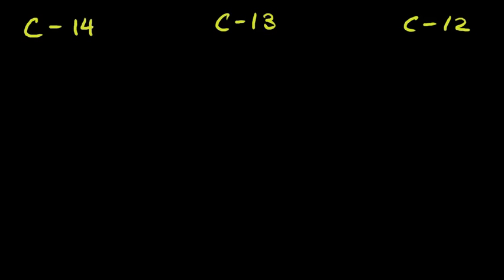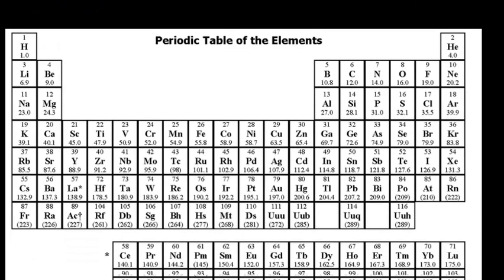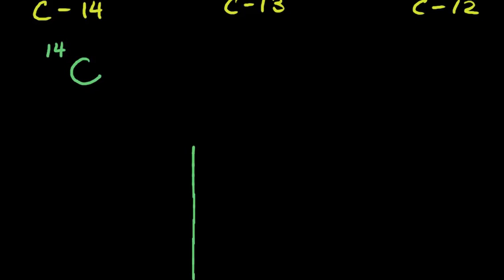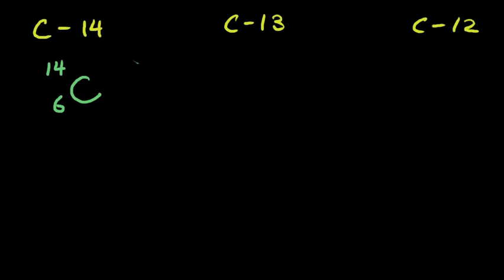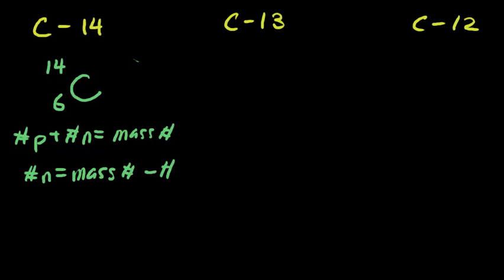So first, let's write it in isotopic notation. So we write our element symbol in the middle. The 14 means we have a mass number of 14. And from our periodic table, which we can find over here, carbon has an atomic number of 6. So we can go back up and write in 6 for our atomic number. To find the number of neutrons, again, the number of protons plus the number of neutrons is equal to our mass number. So the number of neutrons is equal to our mass number minus the number of protons. So we just plug in. We have 14 from our mass number minus the number of protons here, which is 6. So 14 minus 6 will give us 8 neutrons.